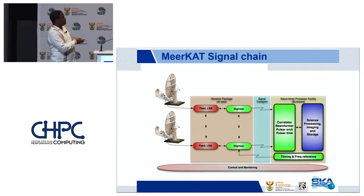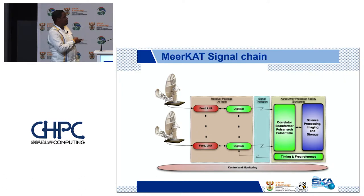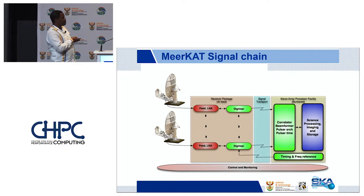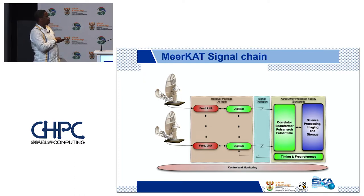Once it comes out of the correlator, it goes into the science data processor. The timing and frequency reference gets added there so we can phase the signals we receive. Underneath all this is the control and monitoring system — on this antenna alone there are about 800 sensors checking various things including the shape of the dish, temperature, where it's facing, and all sorts of performance issues. That goes across all subsystems — if a hard drive dies at the CHPC, control and monitoring advises me.